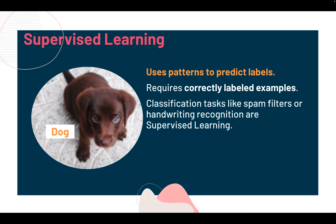Supervised learning uses patterns to predict labels and requires correctly labeled examples. Examples of supervised learning tasks include spam filters — if you know whether emails are spam or not, you can build a filter — and handwriting recognition, using thousands of labeled digit images. Those CAPTCHA challenges where you label buses in images are actually you helping label a supervised learning dataset. The system detects whether you're human based on how long it takes you to click, not your responses.